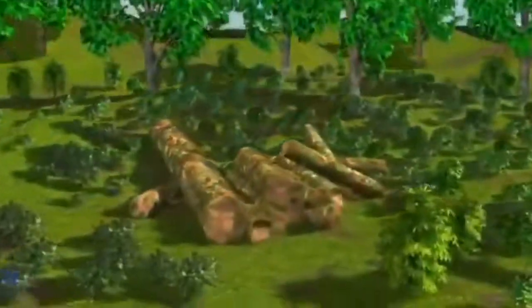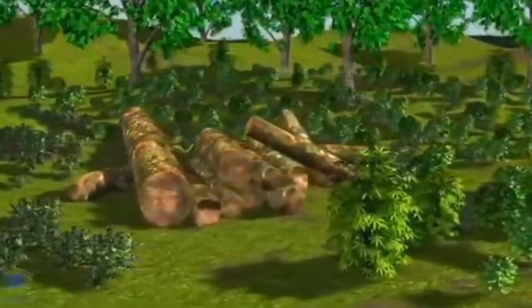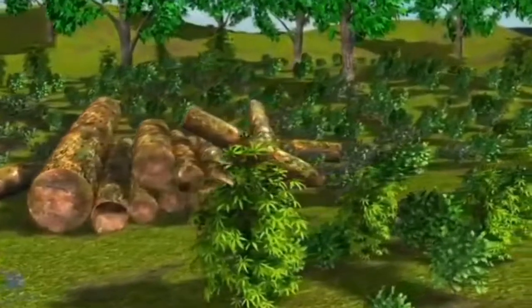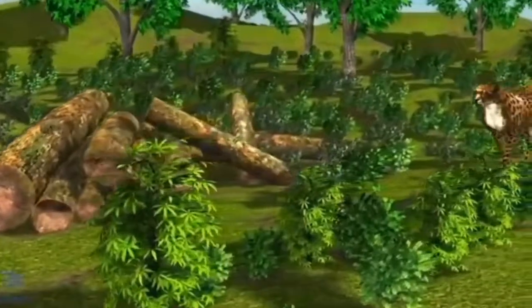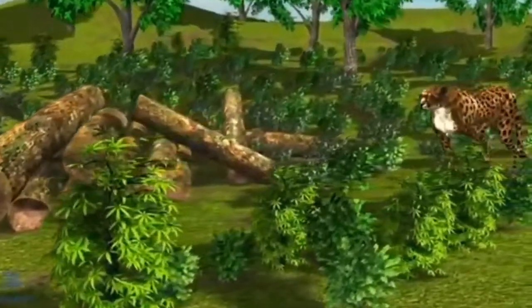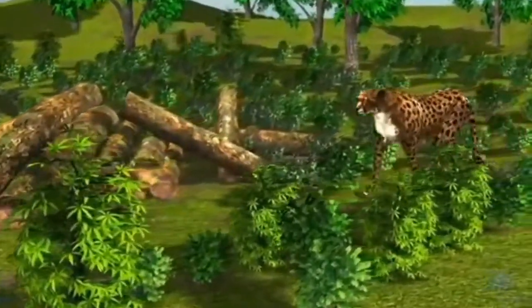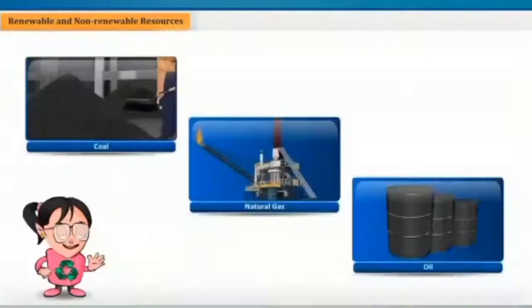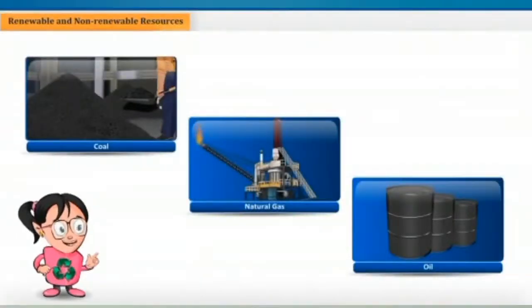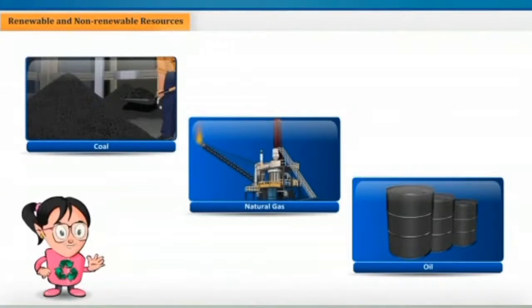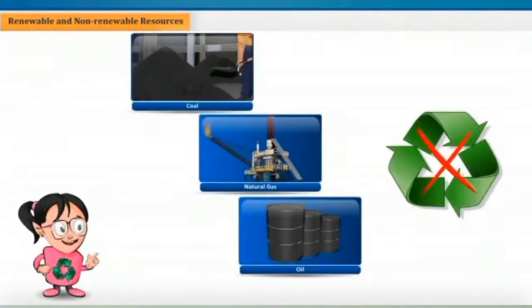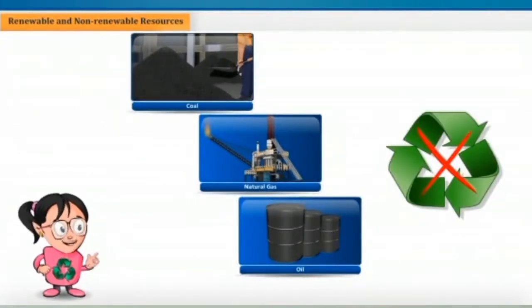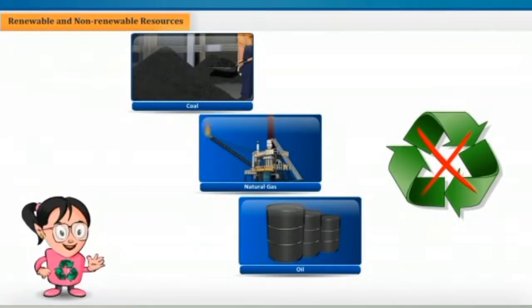Trees can be cut down, but they can be planted again. Scientists also consider sunlight, wind, plants, and animals as renewable resources.